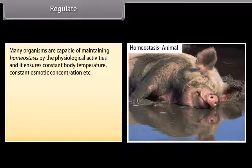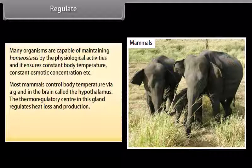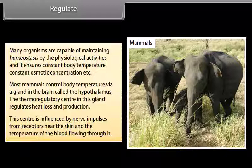Regulate: Many organisms are capable of maintaining homeostasis by physiological activities, ensuring constant body temperature and constant osmotic concentration. Most mammals control body temperature via a gland in the brain called the hypothalamus. The thermoregulatory center in this gland regulates heat loss and production. This center is influenced by nerve impulses from receptors near the skin and the temperature of the blood flowing through it.